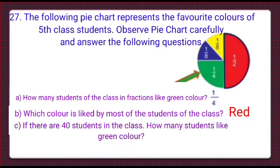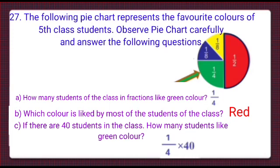Part C: if there are 40 students in the class, how many students like green color? The fraction for green color is one-fourth in this pie chart. So one-fourth of 40 students is calculated as 1/4 multiplied by 40, which equals 10. Therefore, 10 students like green color.